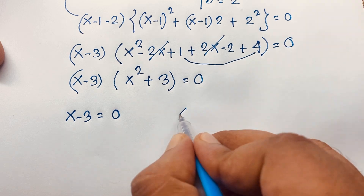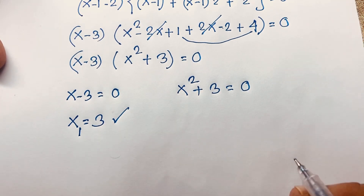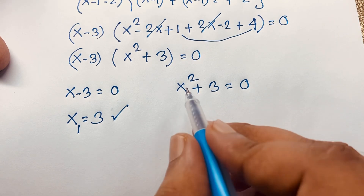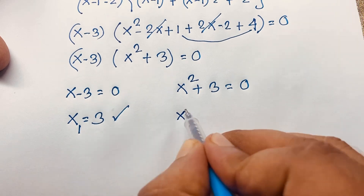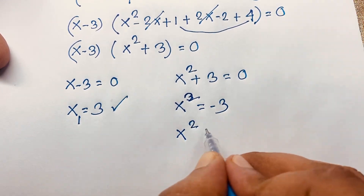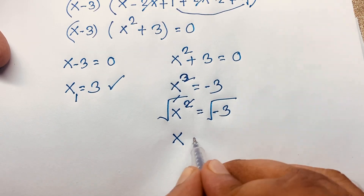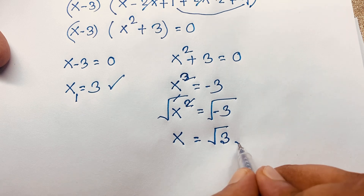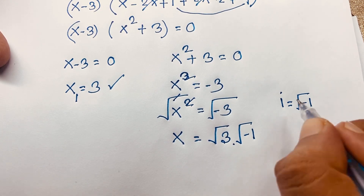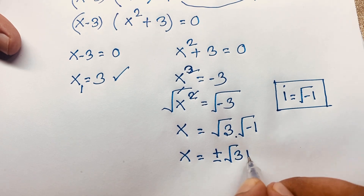So we have two cases: first case x minus 3 = 0, giving x = 3 as the real solution. Second case: x² + 3 = 0. Subtracting 3 from both sides: x² = minus 3. Taking the square root of both sides, x = square root of negative 3, which equals square root of 3 times square root of negative 1. Since √(−1) = i, this is an imaginary number.